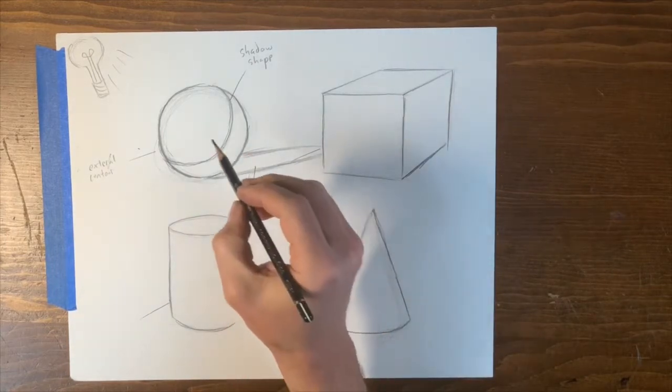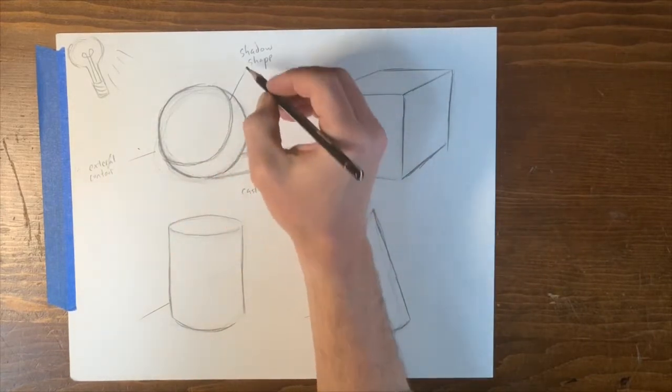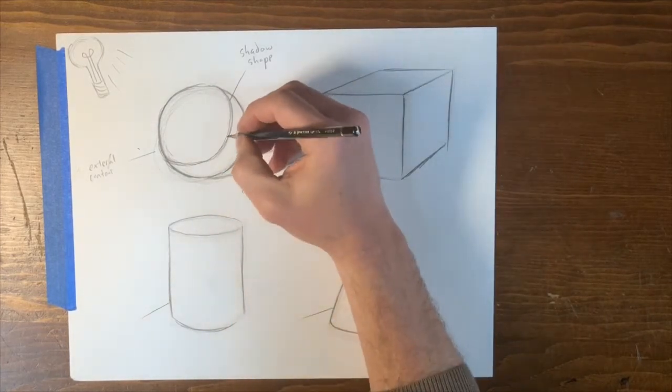Okay. So there we have it. We have light on our form. We have an external contour. We have light on the form. We have the shadow shape. We have the cast shadow. Now we can go into more subtle information.